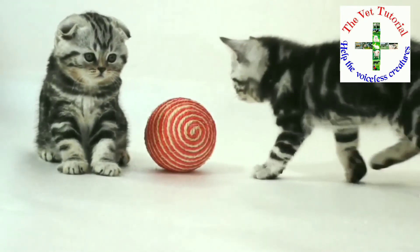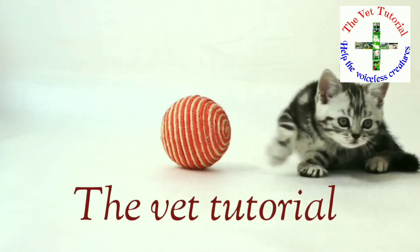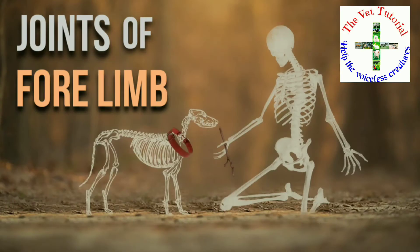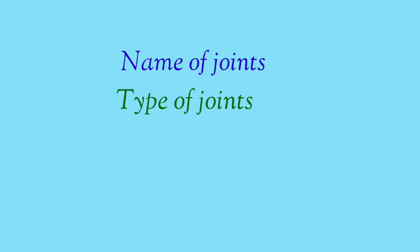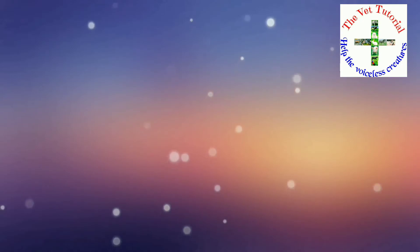Hello everyone, welcome to my channel. Today we are going to study about the joints of the forelimb in a very simple tabular form. In this table I am going to cover the name of joints, the type of joints, movement the joint shows, bones involved in joint formation, and the ligaments.